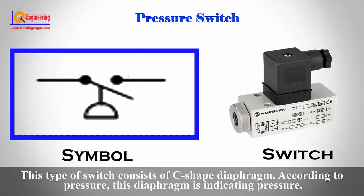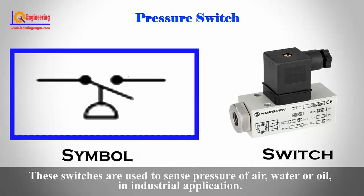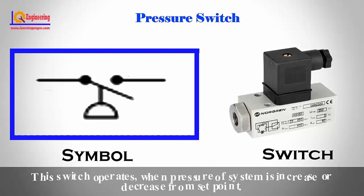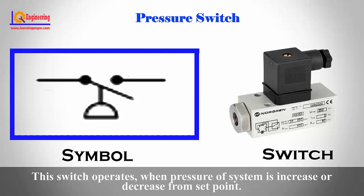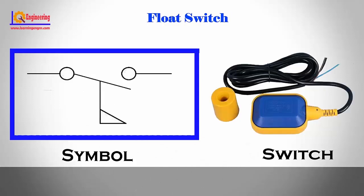Pressure switch. This type of switch consists of a C-shaped diaphragm. According to pressure, this diaphragm indicates pressure. These switches are used to sense pressure of air, water, or oil. In industrial applications, this switch operates when the pressure of a system is increased or decreased from its set point.